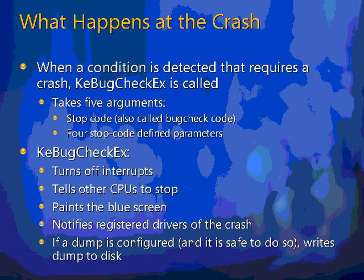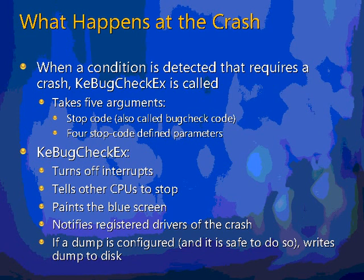When something in kernel mode detects a problem, it shuts down the machine by calling a function called keBugCheckEx. That function takes five arguments. The first is called the stop code — the component's high-level reason for crashing the machine. The other four parameters you interpret with respect to what the stop code is. keBugCheckEx turns off interrupts, tells all the other CPUs to stop processing, and paints the blue screen of death. Drivers can request notification of the crash if they want to shut down their hardware safely, and then if configured, it writes a dump to disk.